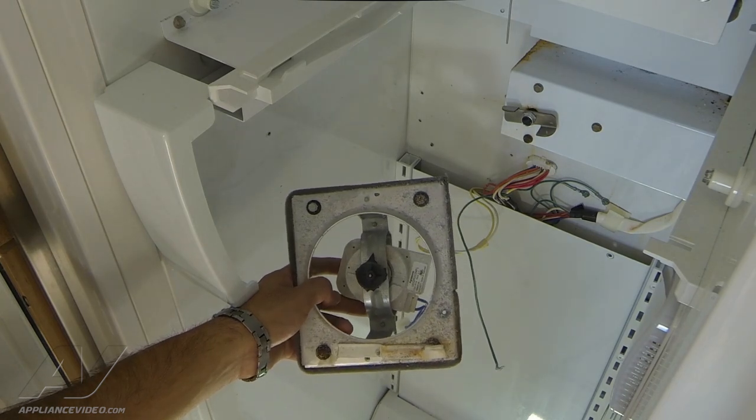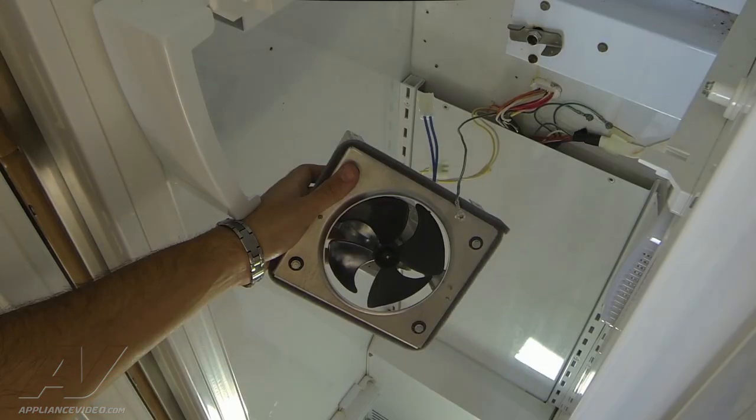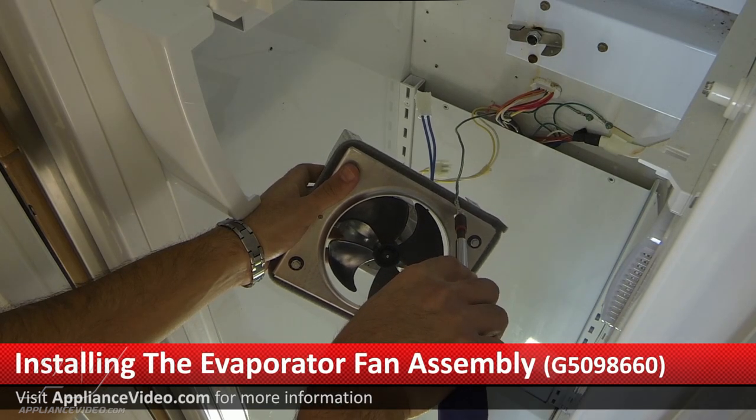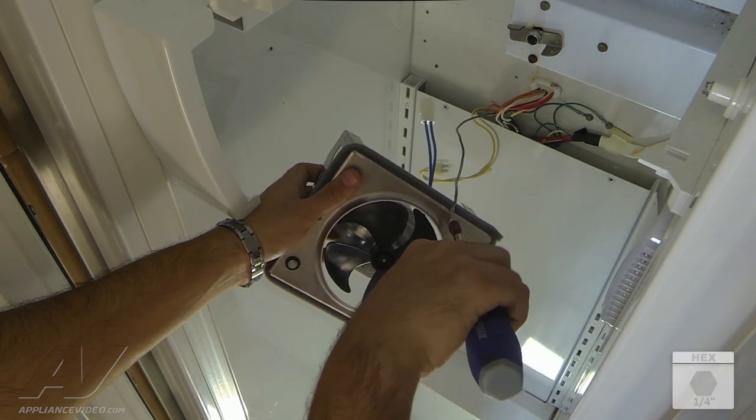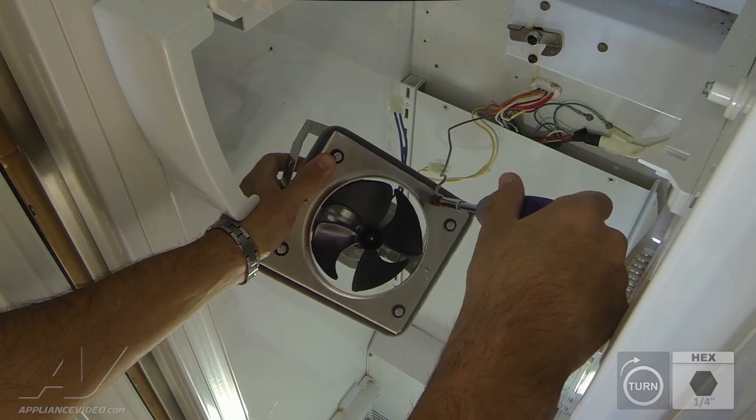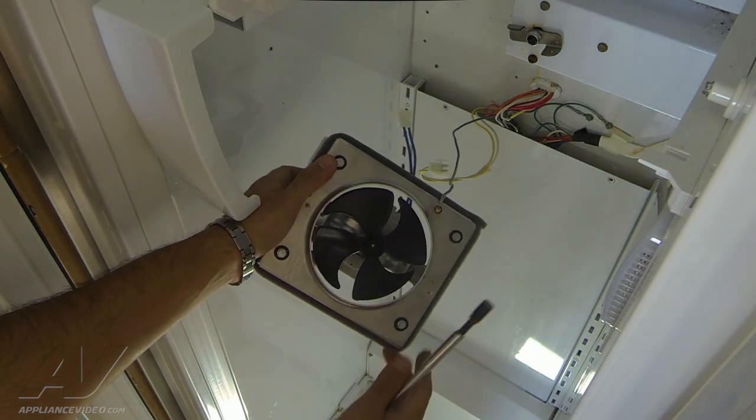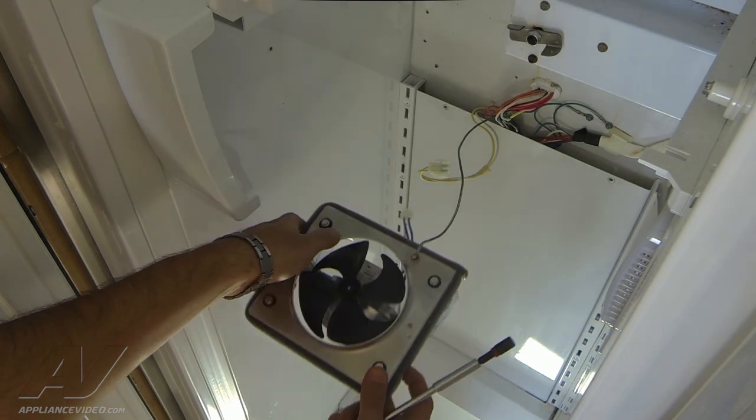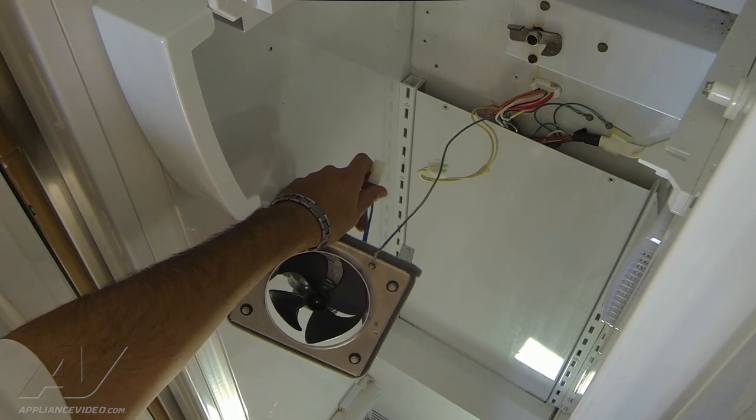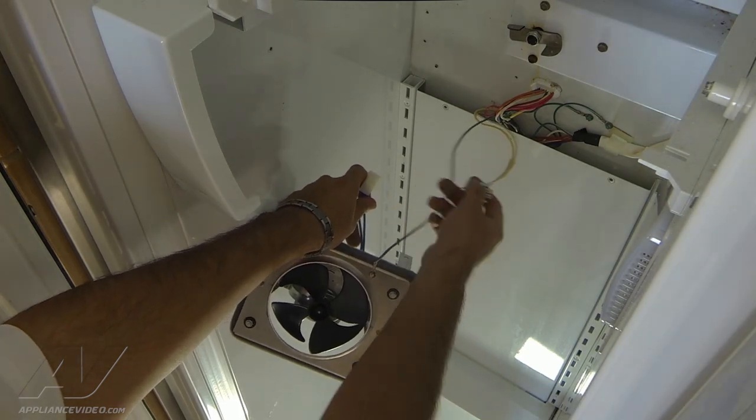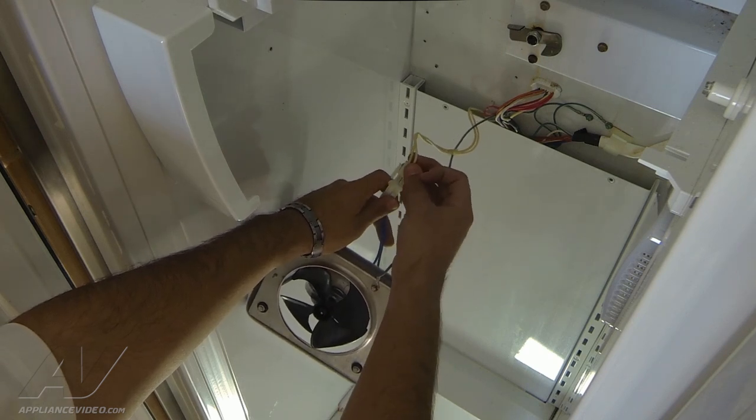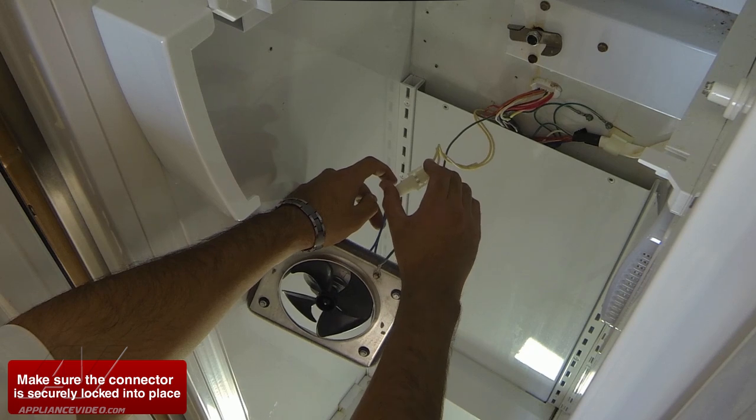Now we're ready to install the new evaporator fan motor assembly. We're going to install the ground strap to the new fan motor assembly. It goes in the same exact position as the old one. Once the ground strap has been installed, we can reattach the wires that go to the fan motor to the connector. It's keyed to go on one way only, so you find the correct position and just push the clips together.